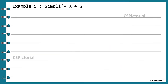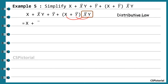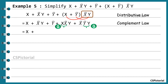Simplify x + x̄y + ȳ + x + ȳ into x̄y. The terms in a Boolean expression could be any variable — x, y, z, etc., as used in this expression. The simplification steps are similar to the previous examples: apply appropriate Boolean laws at each step to reduce the number of terms.